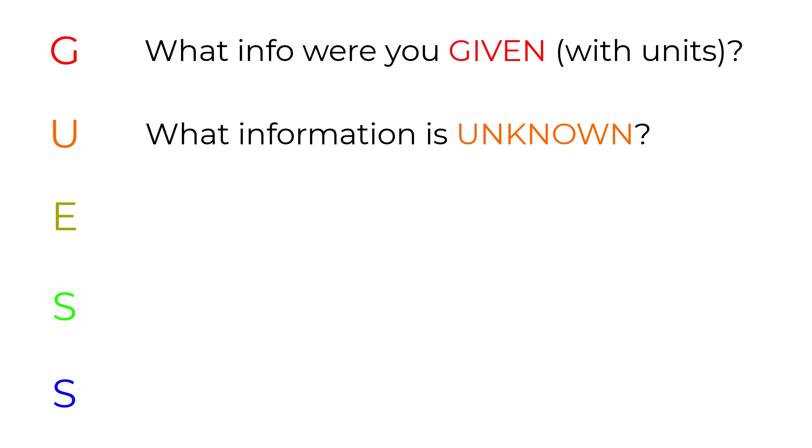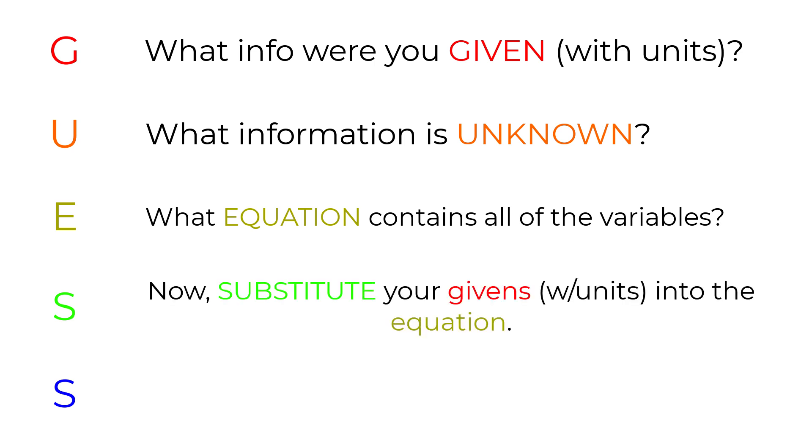Third, you identify an equation that contains all of the variables, including the variable that you are solving for. Next, you substitute the given information into your equation. Finally, you solve the equation by simplifying all values and units to get your final answer.